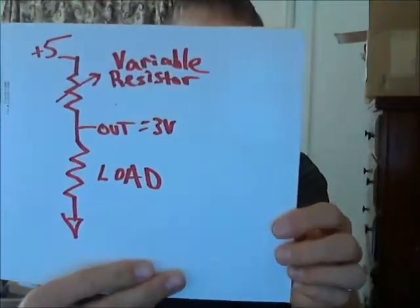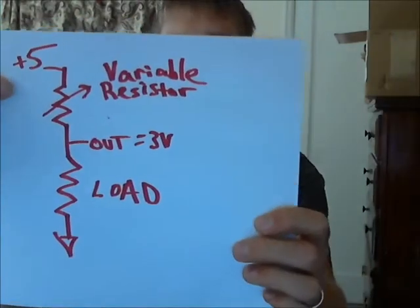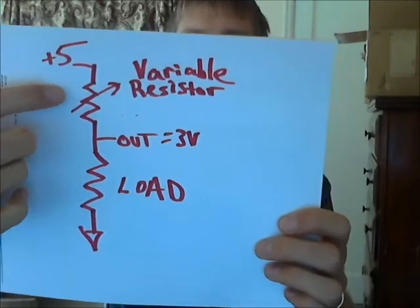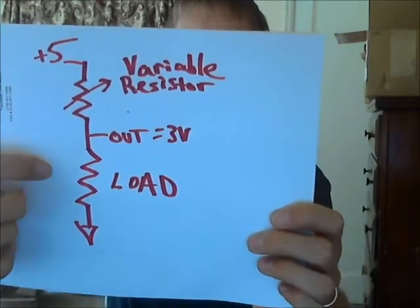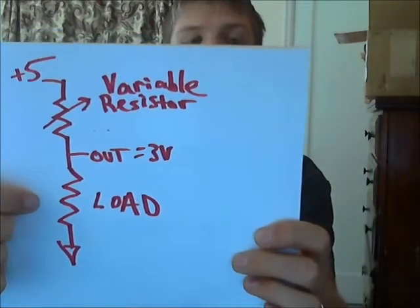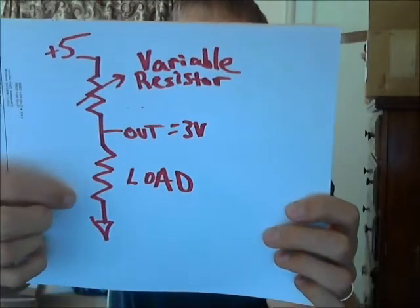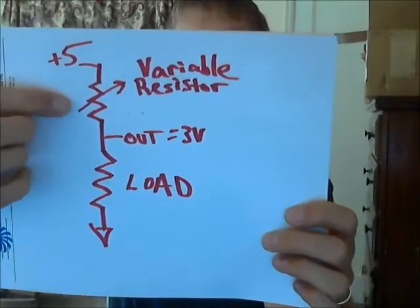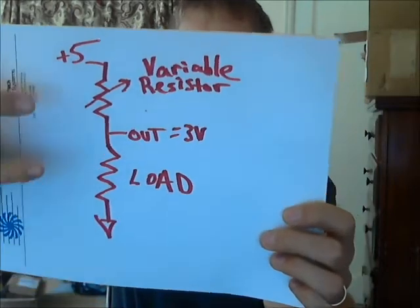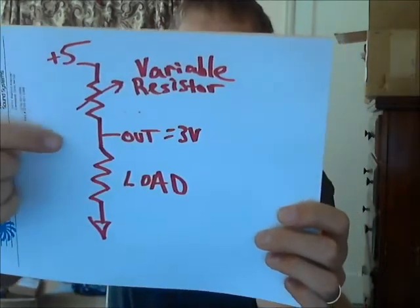So wouldn't it be great if someone invented a variable resistor? Something that would allow you to put it in this design. I've got a 5 volt input, and then we have this magical variable resistor. We don't even need a fixed bottom resistor - we can just use our load as the bottom end of the voltage divider. No matter what the load was, this variable resistor would change its value so that the ratio between the two resistors results in a 3 volt output. Then we don't have any power loss or voltage variation when the load changes.